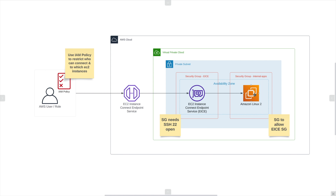Now while this diagram is a bit high level, you can see there is no internet gateway, there is no NAT gateway, meaning this EC2 instance is completely limited to being on the internal network. There's no internet connection inbound or outbound.